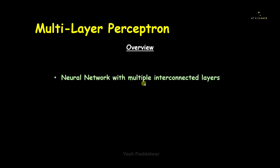Multi-layer perceptron is basically a neural network with multiple interconnected layers. Interconnected means it has different neurons that are connected with each other, and it has multiple hidden layers which are useful for capturing complex as well as intricate features.